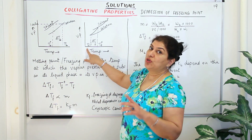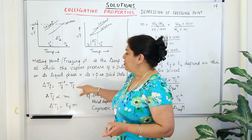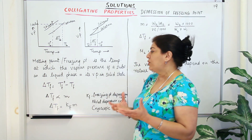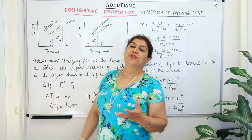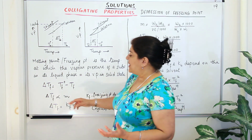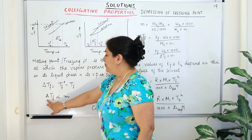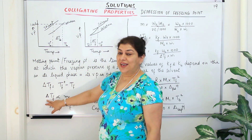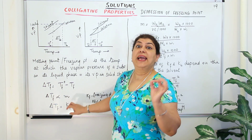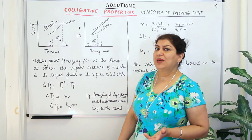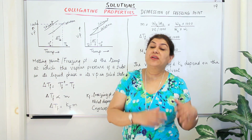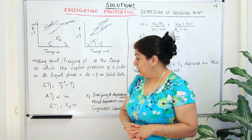The magnitude of delta Tf, the difference in temperature, is given by T0f minus Tf. And just as we had delta Tb proportional to molality, the depression in freezing point delta Tf is also proportional to molality — M-O-L-A-L-I-T-Y. Molality is the number of moles of solute present in 1000 grams or 1 kg of the solvent.